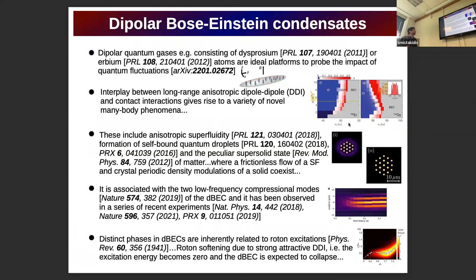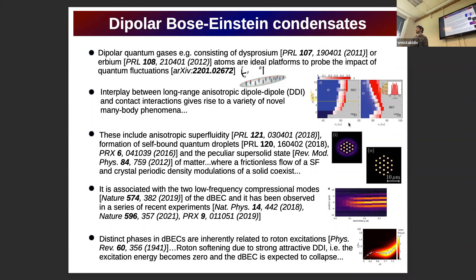Let me start with the topic of this talk. I will talk about dipolar Bose-Einstein condensates. Dipolar quantum gases commonly consist in experiments of either erbium or dysprosium atoms and offer ideal platforms for probing effects of quantum fluctuations. It is the interplay between short-range contact interactions and long-range ones that give rise to various quantum phenomena.